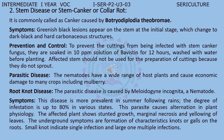An important parasitic disease is root knot disease, caused by the nematode Meloidogyne incognita. This disease is more prevalent in summer following rains; the degree of infestation is up to 80% in various states. The parasite causes alteration in plant physiology. The affected plant shows stunted growth, marginal necrosis and yellowing of leaves. Underground symptoms include the formation of characteristic knots or galls on the roots — small knots indicate single infection and large ones indicate multiple infections.